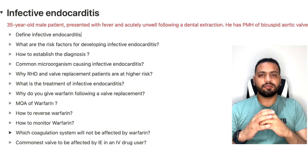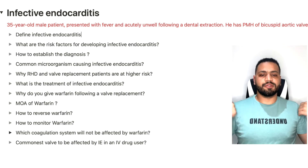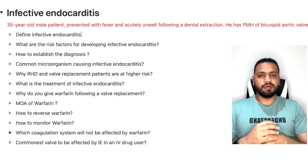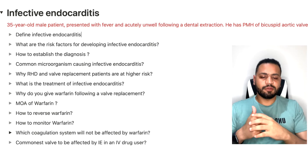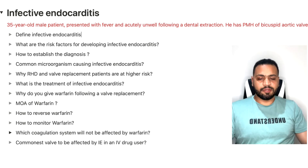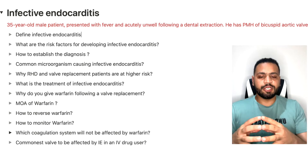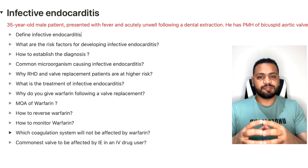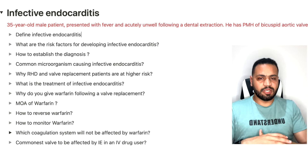Hello everyone. In this series I'm going to talk to you about some of the common pathology questions that come in the MRCS Part B exam. The first question is talking about infective endocarditis, and the scenario will usually be a 48-year-old male patient who has a bicuspid heart valve, presented after a dental extraction with fever and acutely unwell.